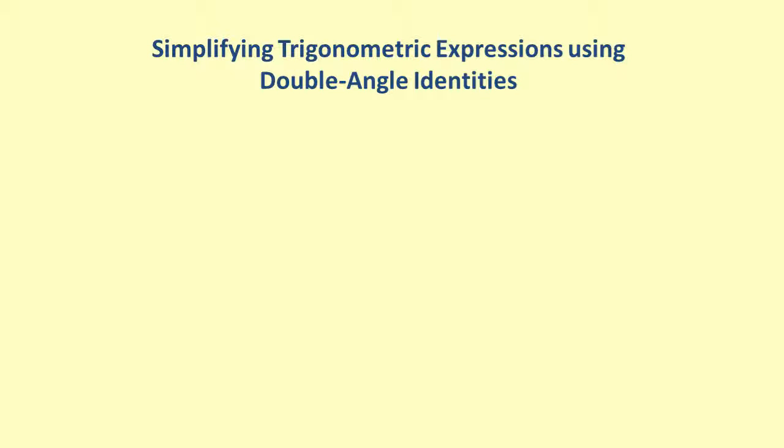In this video, you will learn how to find exact values of functions using the double angle identities without needing to know the actual value of the angle. Let's begin by graphing the function y equals the quantity cotangent of x plus tangent of x over cotangent of x minus tangent of x.